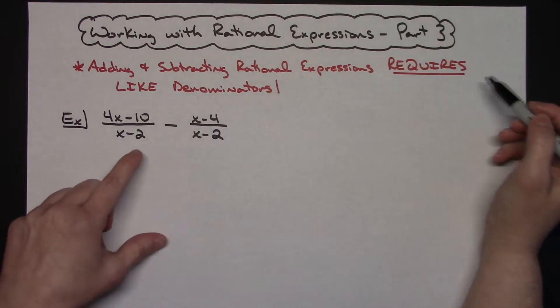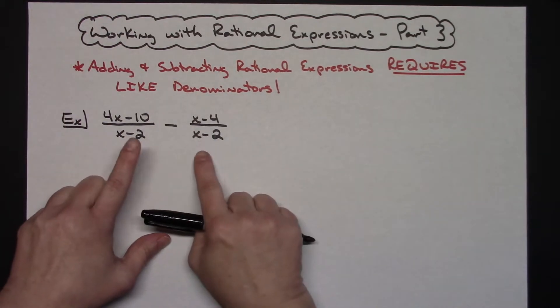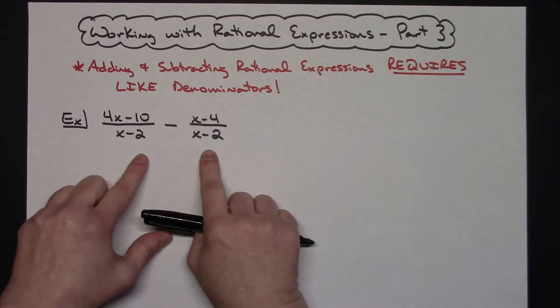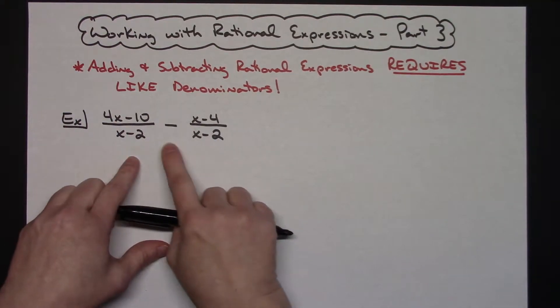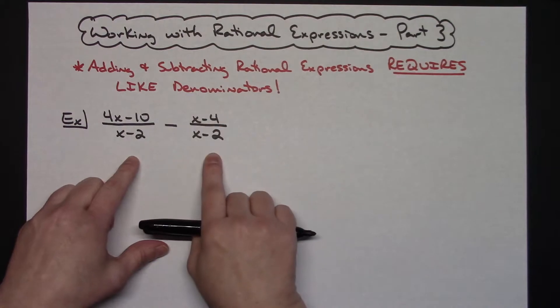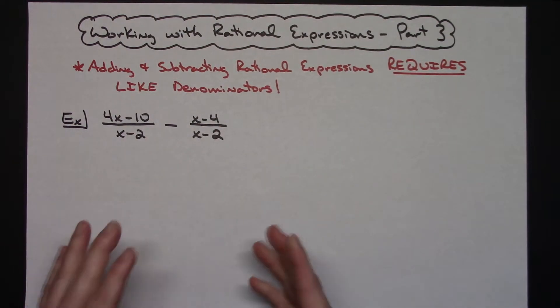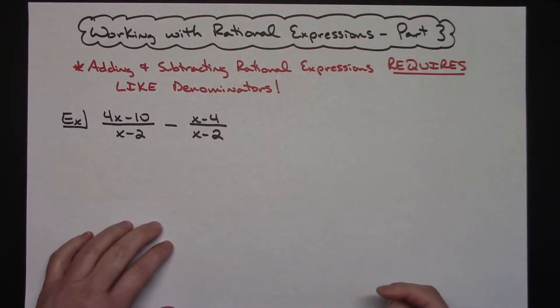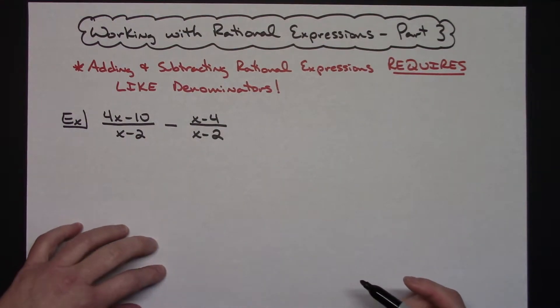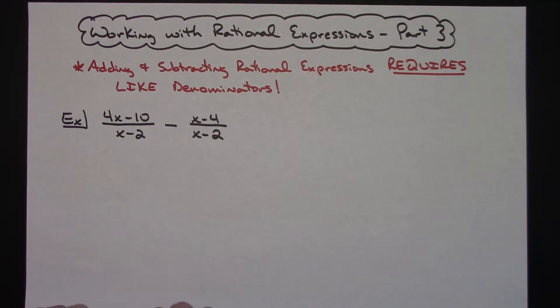It's identical to adding two fractions — plain ordinary fractions like one half plus three fourths. You would have to get common denominators before you attempted to add or subtract them.